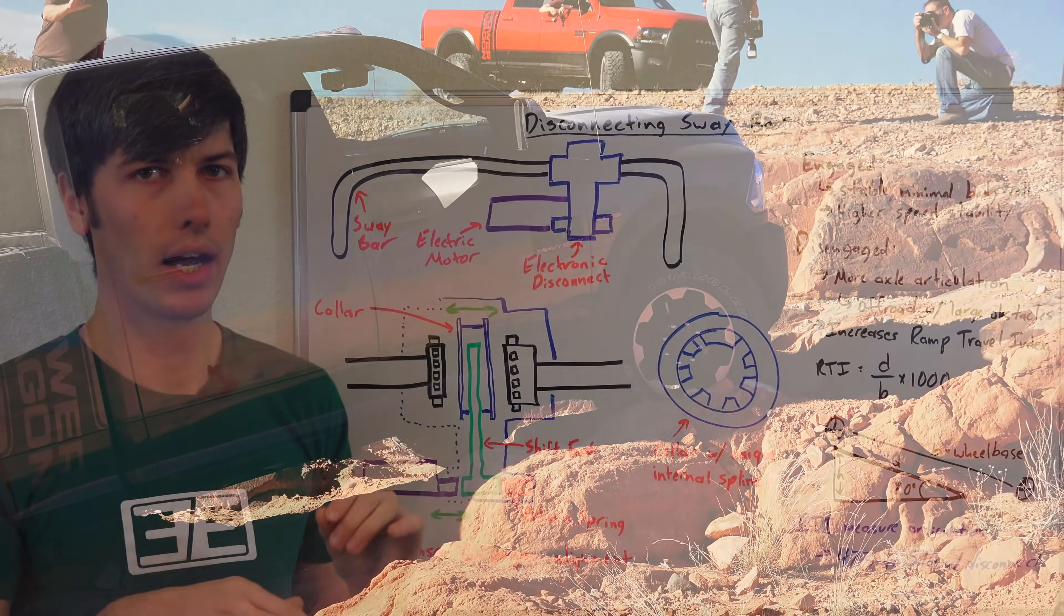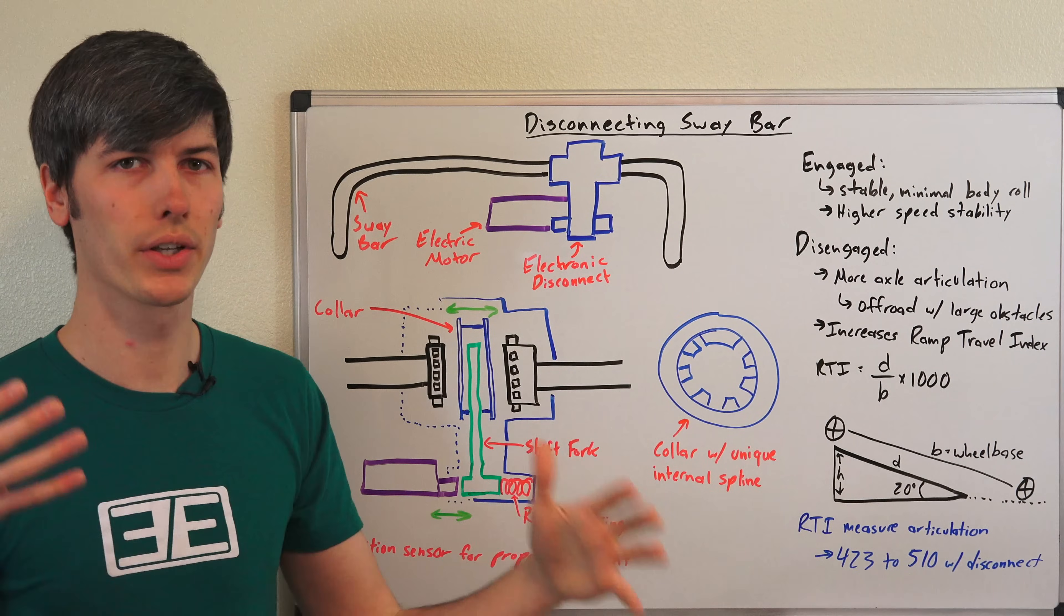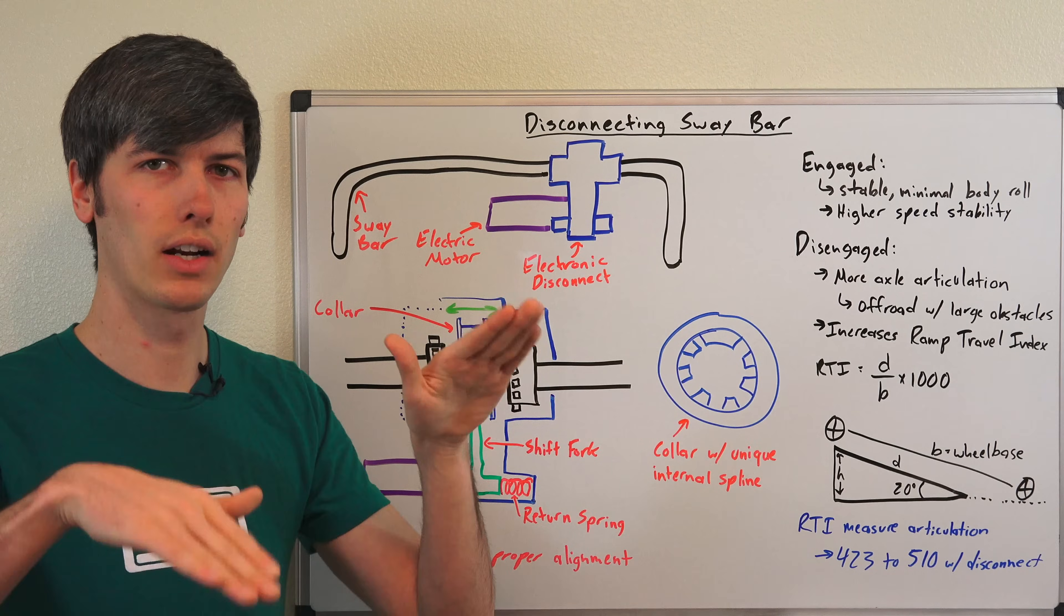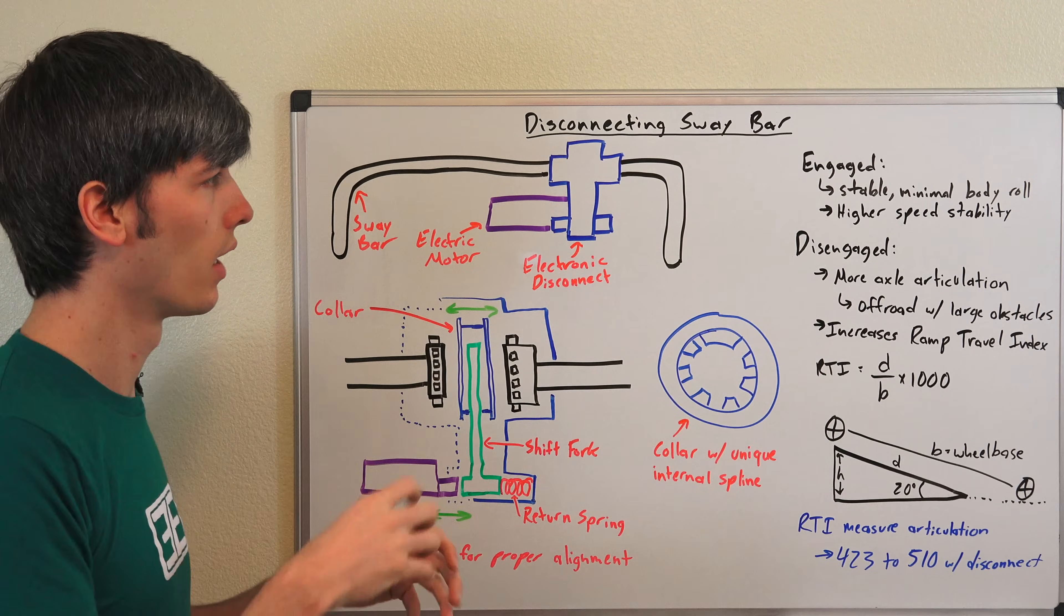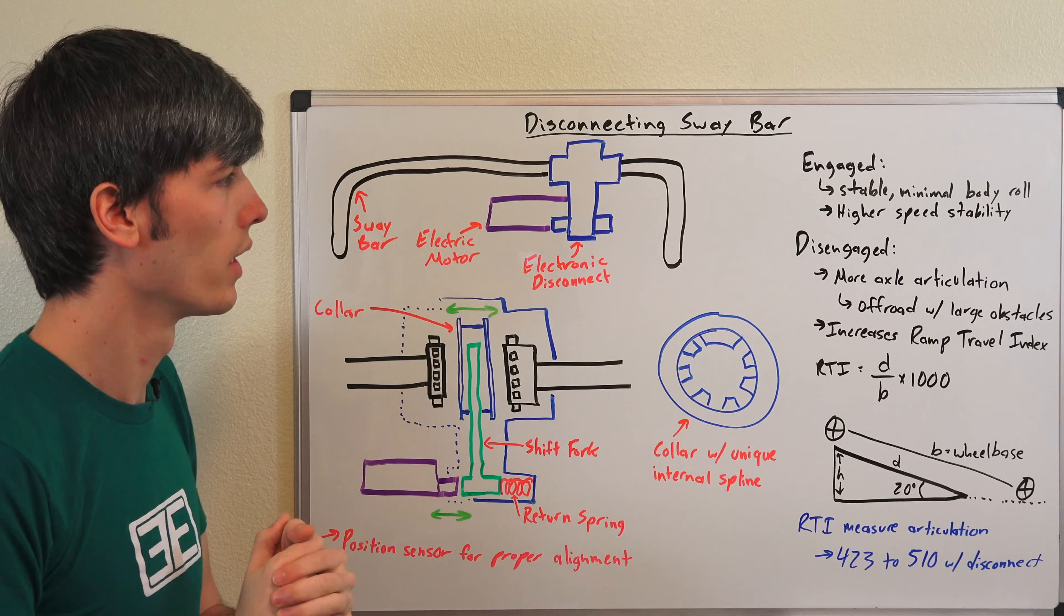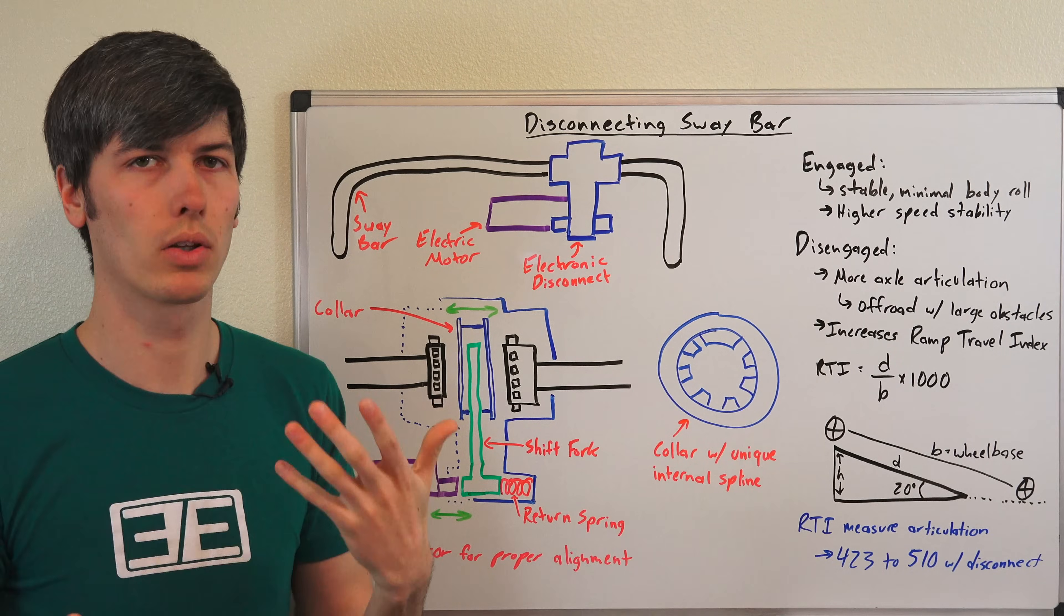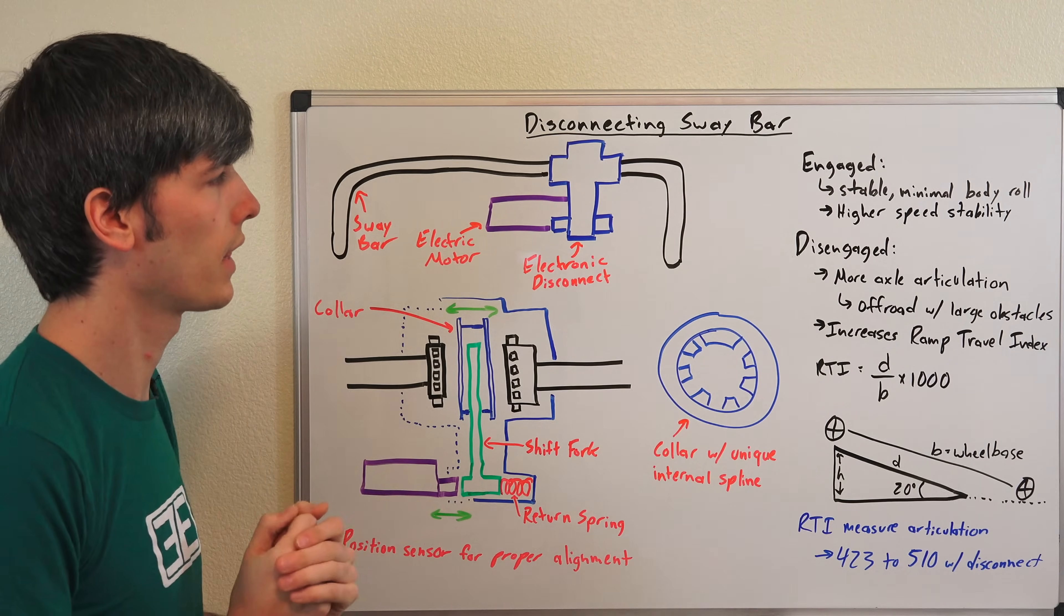Where this comes in handy is when you're off-road and you need more articulation of your axle. So when you disengage it, you will have essentially a softer suspension, and so that's going to allow you to have more articulation from the front to the left side, from your left wheel to your right wheel. And so you'll be able to go over larger obstacles, things like that.